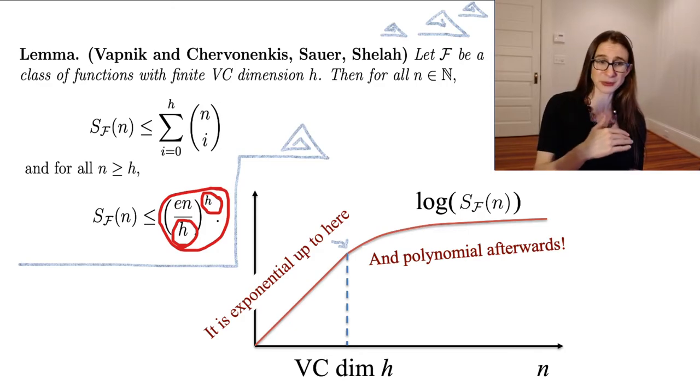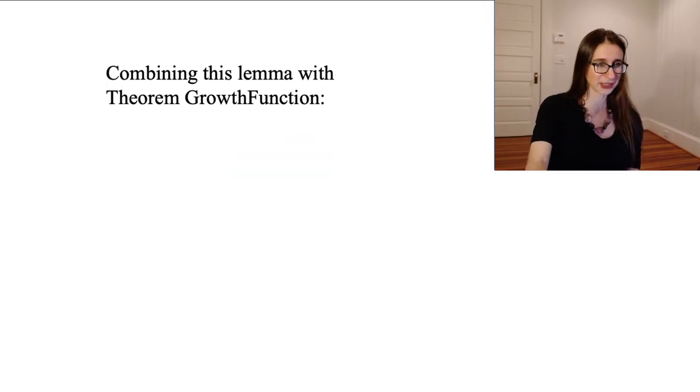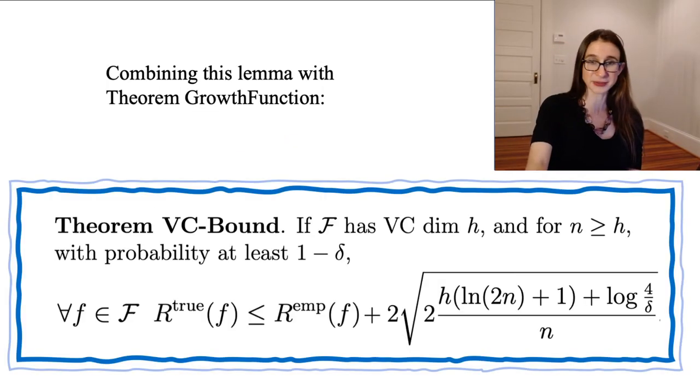So literally, I'm just plugging this lemma into the growth function theorem, because the growth function theorem was in terms of the growth function. And so just put an upper bound on the growth function, plug it in. So that's what this theorem is, the VC bound.